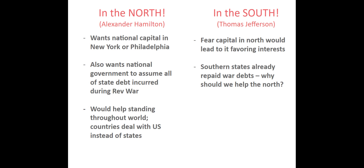As far as the northern states were concerned — largely represented by Alexander Hamilton — they wanted the nation's capital in New York or Philadelphia. At the same time, they wanted the national government to assume all of the state debts incurred during the Revolutionary War. Hamilton's position was that since the states incurred these debts fighting for our liberty, it should be the nation's problem as a whole to pay them off. Having the capital in the North and assuming these debts would improve the United States' standing throughout the world, encouraging countries to deal with the U.S. as a whole rather than with individual states.